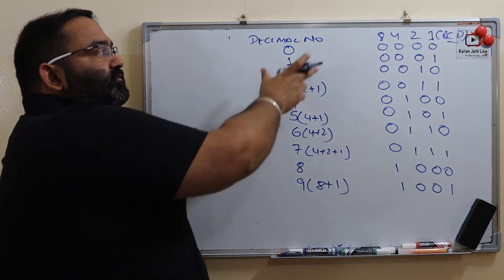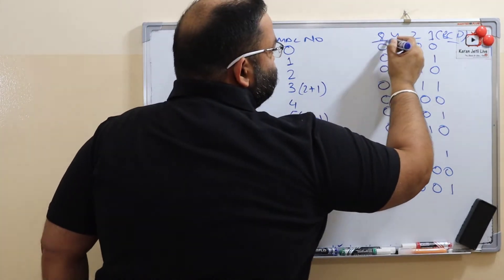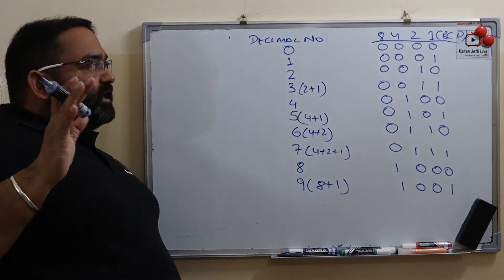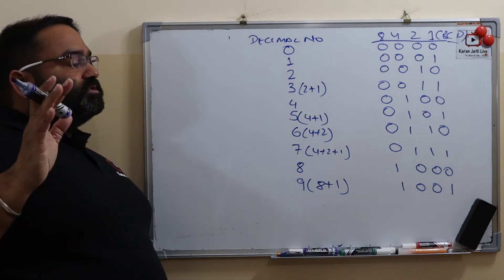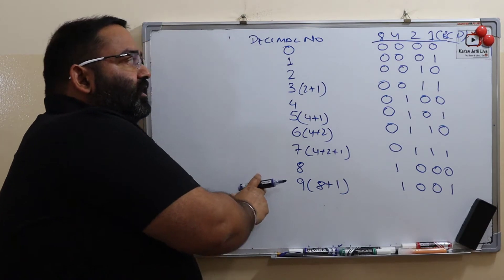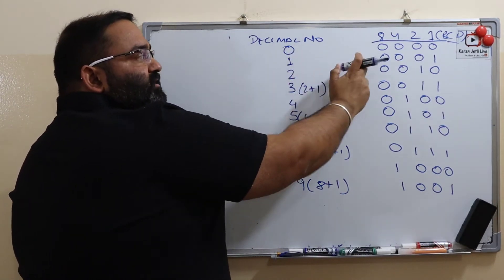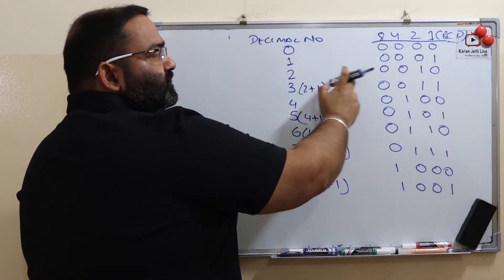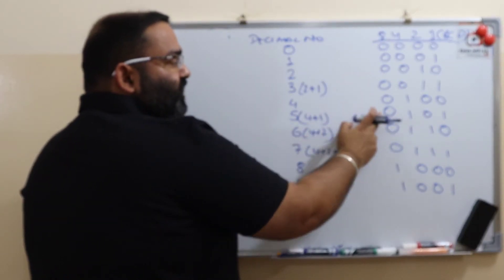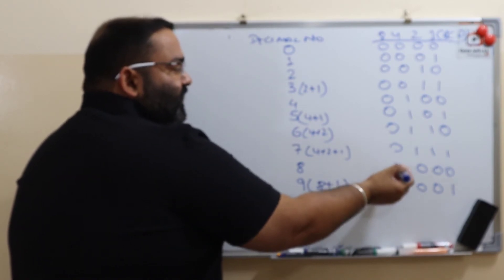These are our decimal numbers and these are our BCD codes. BCD codes are used to represent numbers from 0 to 9. So 0 is 0000, 1 is 0001, 2 is 0010, 3 is 0011, 4 is 0100, 5 is 0101, 6 is 0110, 7 is 0111, 8 is 1000, and 9 is 1001.